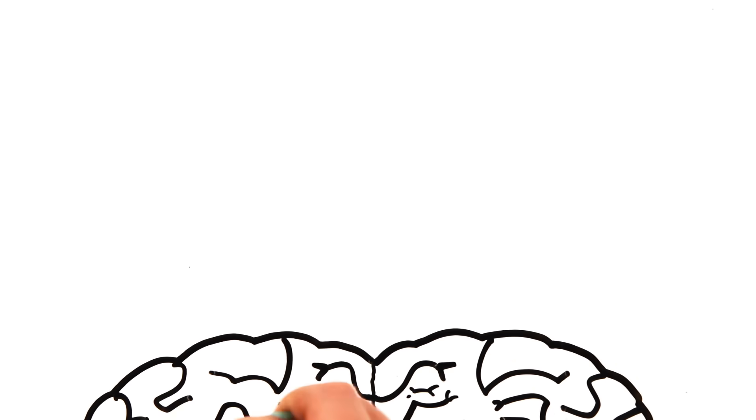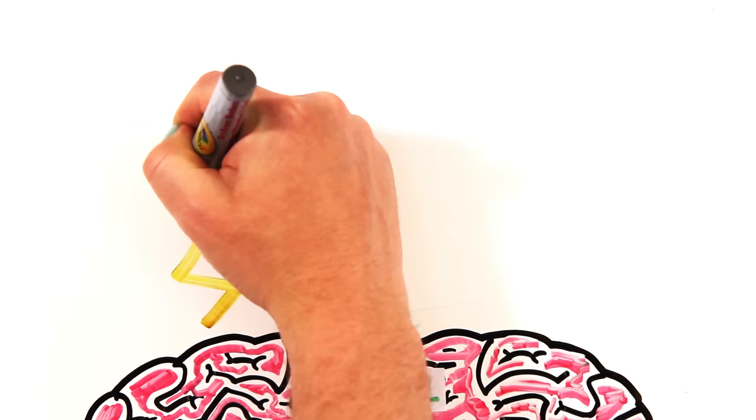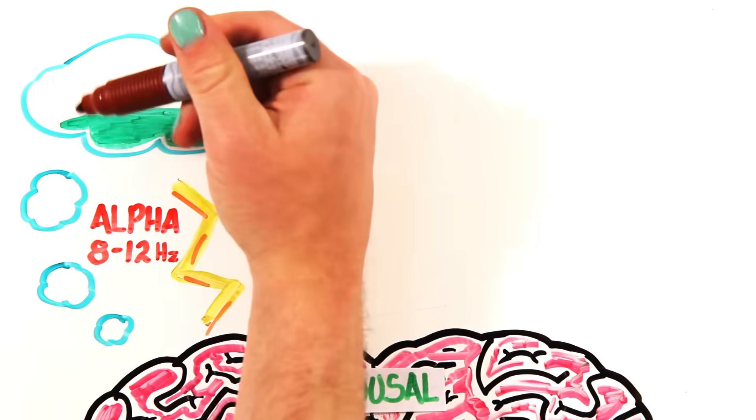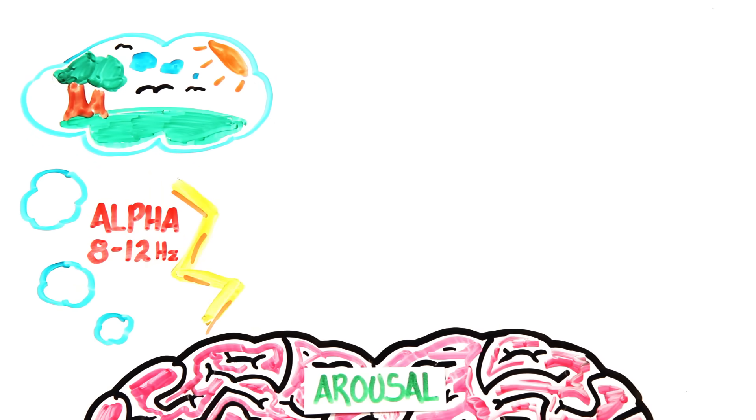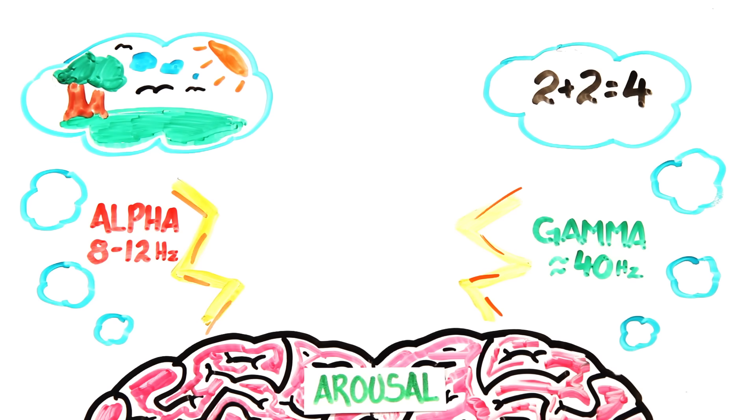We also see a change in brain patterns. Alpha rhythms are commonly associated with wakeful relaxation, like when your mind wanders off, whereas gamma waves are associated with conscious attentiveness.